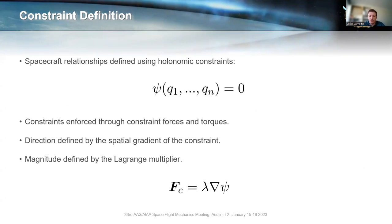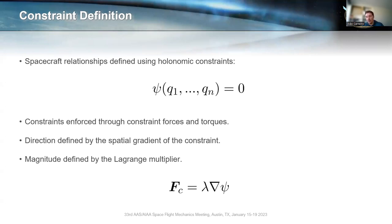This makes sense from a physical standpoint: the goal of the constraint force is to make sure the constraint isn't violated, so we want it to take the system back to the constraint surface through the shortest path, which is perpendicular to it. As for the magnitude, it is defined by the Lagrange multiplier. In classical mechanics and for simpler systems, you can analytically compute the Lagrange multiplier. However, in our case, we want to simulate complex systems — spacecraft with reaction wheels and hinged solar panels — where it is incredibly difficult to solve for the analytic solution. Our solution is to use the Baumgart stabilization method.